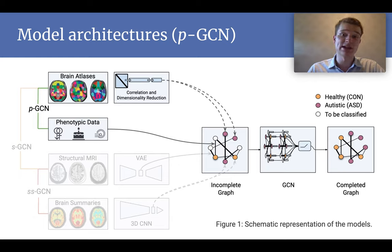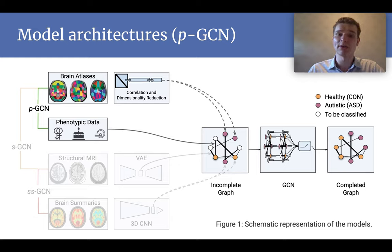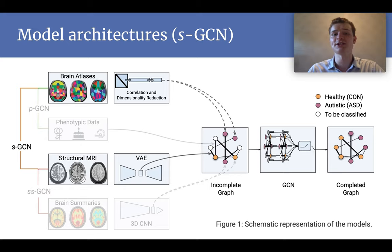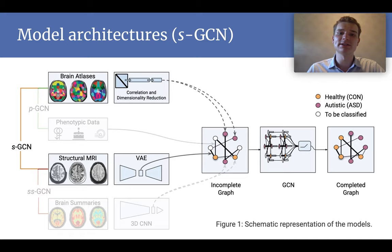So we will now use the actual brain's structure to do so. Here we have the SGCN. We use the structural MRI data, and use these similarities for the edges of the graph.